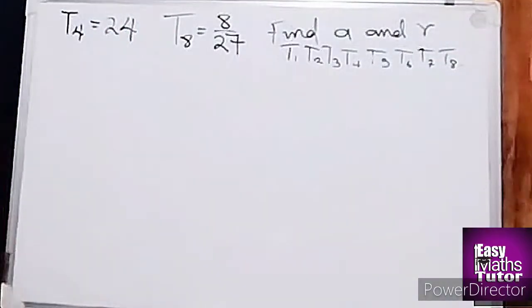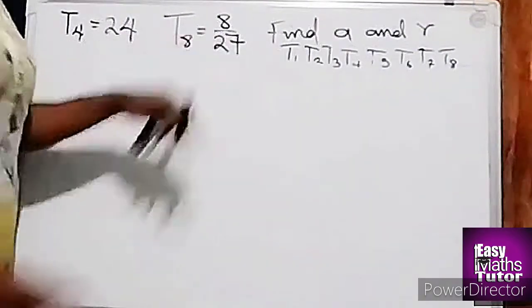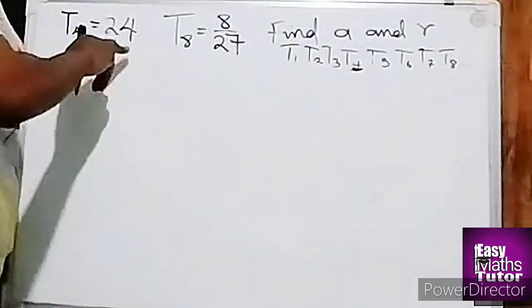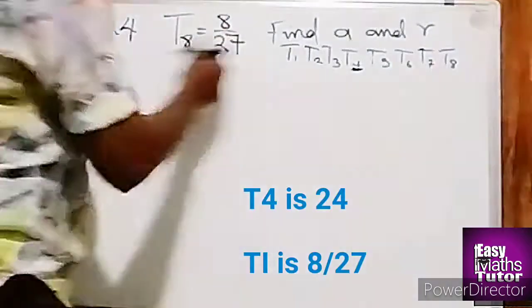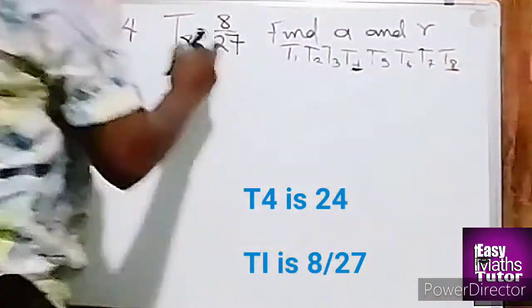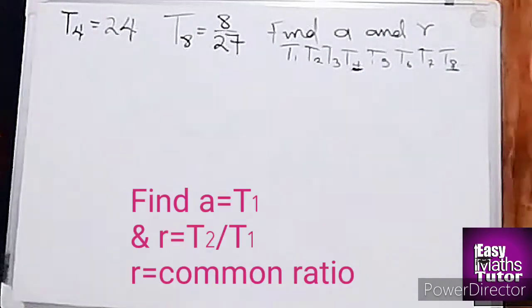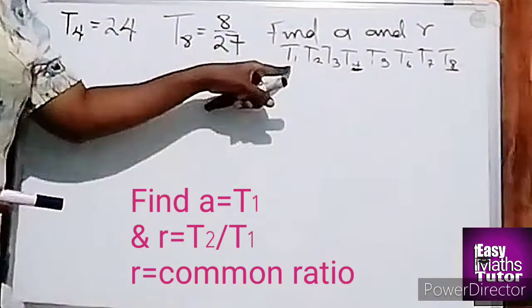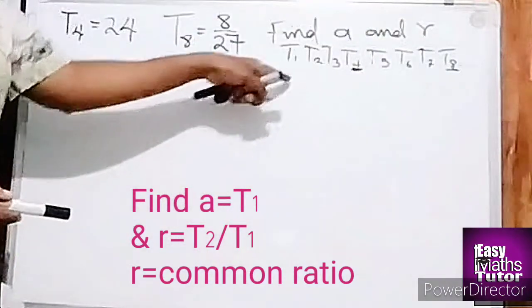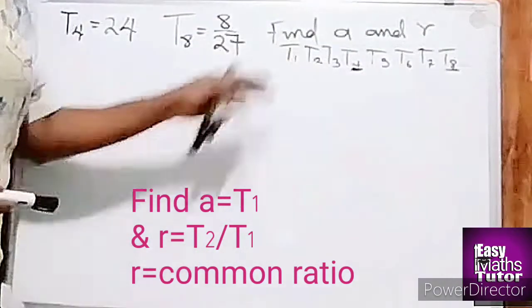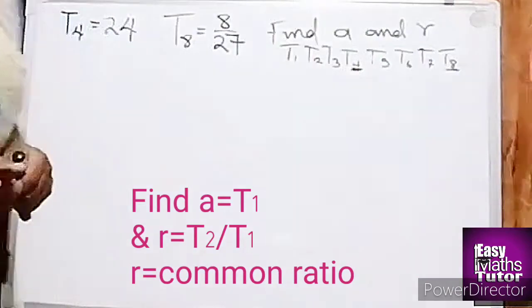Then the fourth term is 24 and the eighth term is 8 over 27. So we're asked to find a, which is T1, and r, which is the ratio between each of the terms.